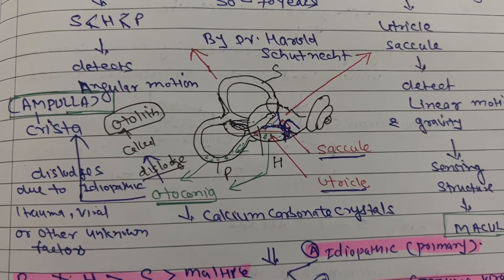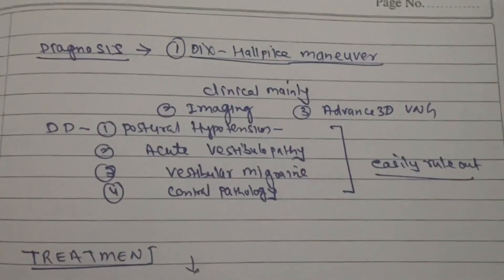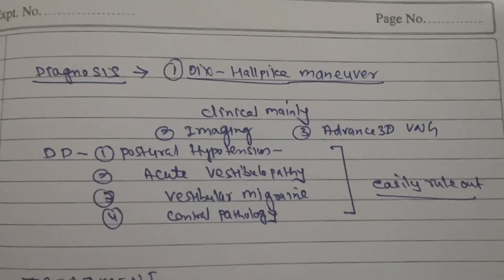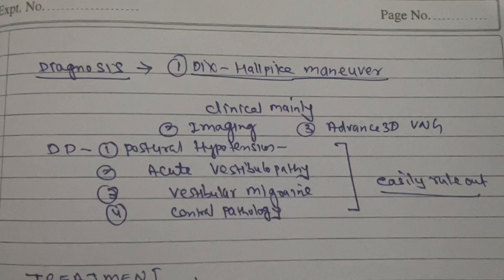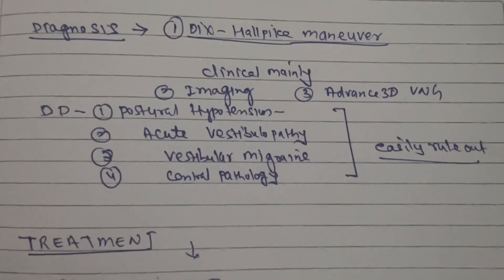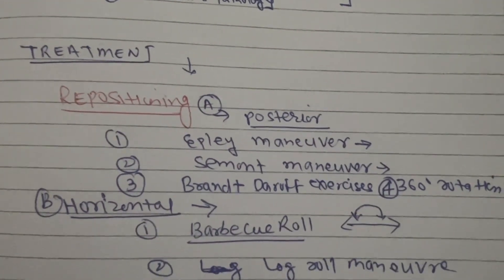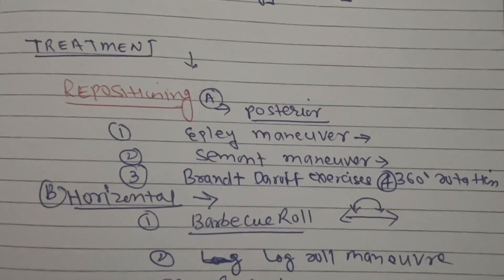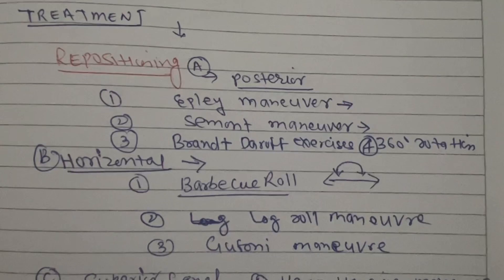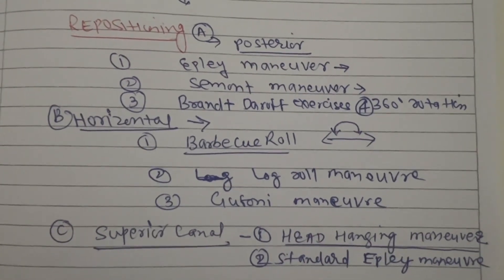This short-duration vertigo, less than 20 seconds, on positional changes is called BPPV. Diagnosis of BPPV mainly uses the Dix-Hallpike maneuver for superior canal and posterior semicircular canal, and the roll test for the horizontal semicircular canal. The repositioning maneuvers for posterior and superior canal are similar: Epley maneuver, Semont maneuver, Brandt-Daroff exercises, and 360-degree rotation.